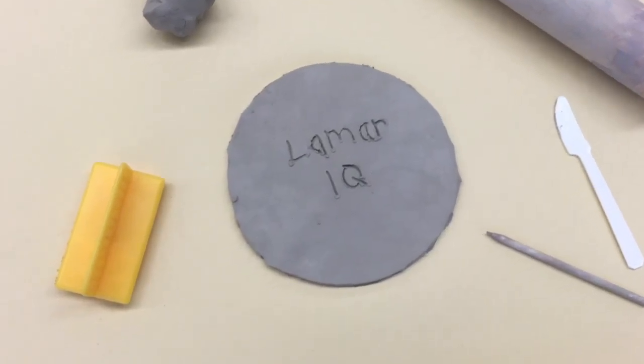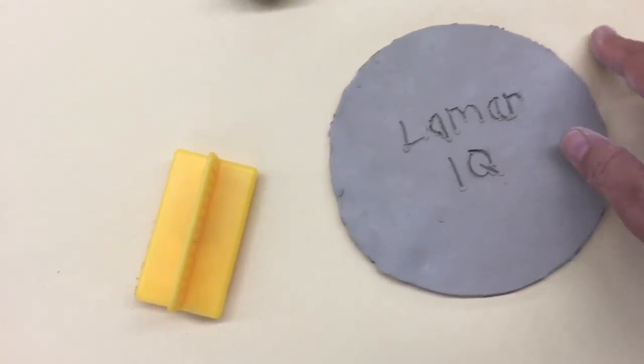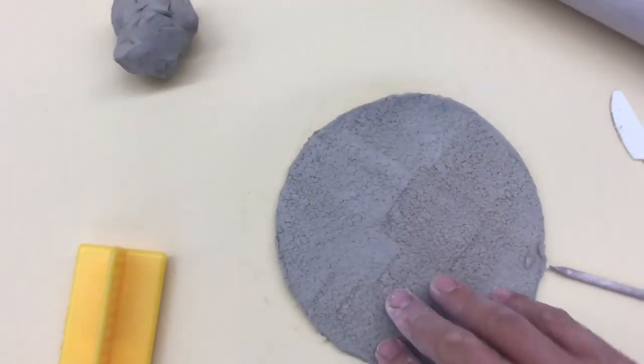Now that my moon is finished and I've carefully put my name and a one Q on the back without making a hole in the front, I'm going to gently flip it over and pick it up. Carry it over and place it on a shelf behind the door. Make sure that your texture side is facing up. We don't want to flatten out or smooth out any of that beautiful texture you created.